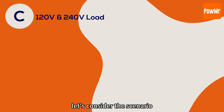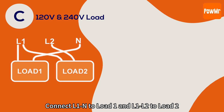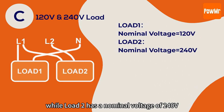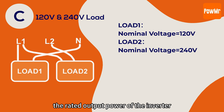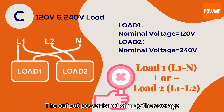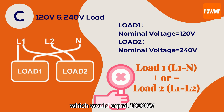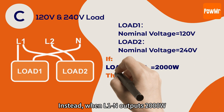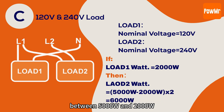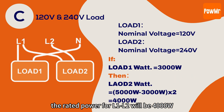Finally, let's consider the scenario where both 120V and 240V loads are connected. Connect L1N to load 1 and L1-L2 to load 2. In this case, load 1 has a nominal voltage of 120V, while load 2 has a nominal voltage of 240V. However, the rated output power of the inverter will differ from the previous two output modes. The output power is not simply the average or sum of the rated power of load 1 and load 2. Instead, when L1N outputs 2,000W, the L1-L2 output power will be twice the difference between 5,000W and 2,000W. Similarly, if a 3,000W load is connected to L1N, the rated power for L1-L2 will be 4,000W.